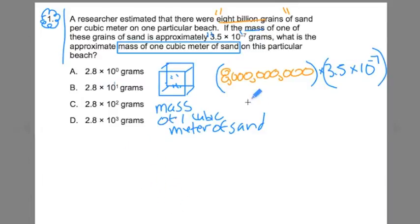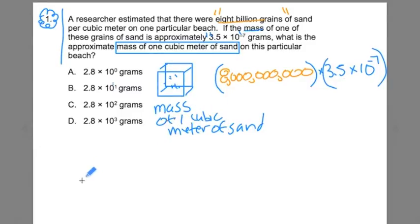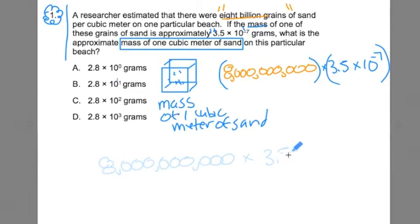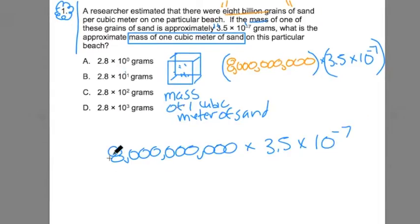Step one. I'm going to rewrite that number sentence to get to the total mass of one cubic meter of sand. It's going to involve me taking 8 billion, multiplying it by 3.5 times 10 to the negative 7th. Step two. I'm going to take each one of these terms and express it as a fraction. Let's take a moment and pause. Let's think about the 10 to the negative 7th.